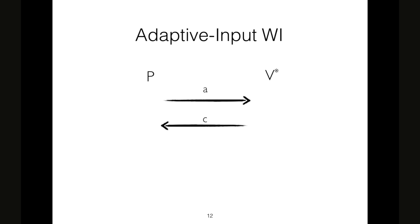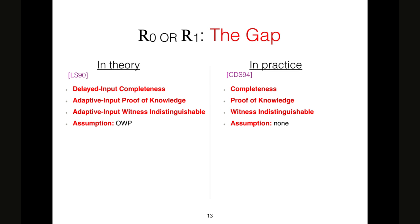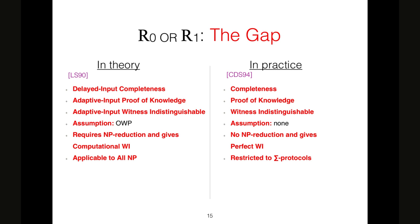Adaptive input witness indistinguishability is enjoyed by LS, standard WI by CDS. A protocol is adaptive input WI if the probability that a malicious adversary wins this game is less than 1.5 plus negligible. What is the game? We have the first two rounds interaction between prover and verifier. And at this point, after the second round has been sent by the malicious verifier, the theorem and the witness are adaptively chosen. And at this point, the prover tosses a coin and uses the witness WB to compute the third round. The malicious verifier wins if it guesses the bit used in this computation. In LS, one-way permutation is needed. No assumptions are required for CDS. Also with LS, we obtain only computational WI. With CDS, we get perfect WI. LS is for all NP, as I said, but CDS works only taking as input sigma protocols.